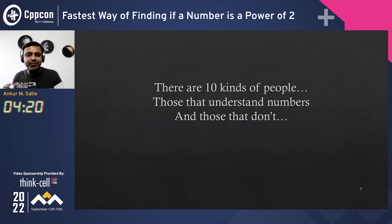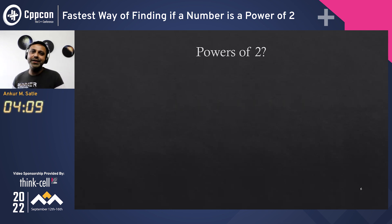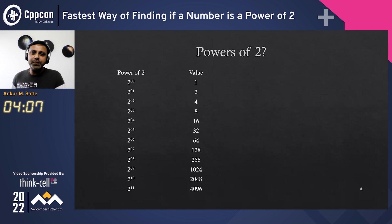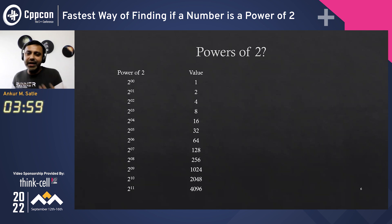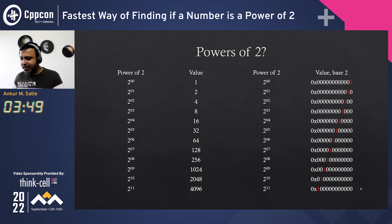Just a reminder: there are these many kinds of people — those that understand numbers and those that don't. Let's see where you are. Powers of two, when represented in their own base, would just have a single one in them. So for a binary number, it would just end up having a single bit set in the entire number, as you see here. So that's the property to look for.